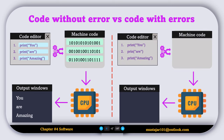Now let's see how interpreters handle code with an error. The interpreter translates the first line of code into machine code, passes it to the CPU, and the CPU shows the output. The interpreter reads the second line and encounters an error. Execution stops and an error message is displayed indicating the problem. When the user fixes the error in the second line, the interpreter resumes execution from the second line where the error occurred. It then translates the fixed second line to machine code, passes it to the CPU, and the CPU shows the output.